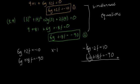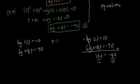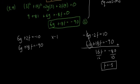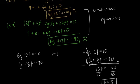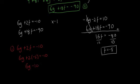Adding the two equations, the 6g terms cancel. 18f − 2f gives 16f, and −90 + 10 gives −80. So 16f = −80, and dividing both sides by 16 gives f = −5. Now we sub f = −5 back into Equation 1: 6g + 2(−5) = −10, so 6g − 10 = −10. The −10s cancel, leaving 6g = 0, so g = 0.